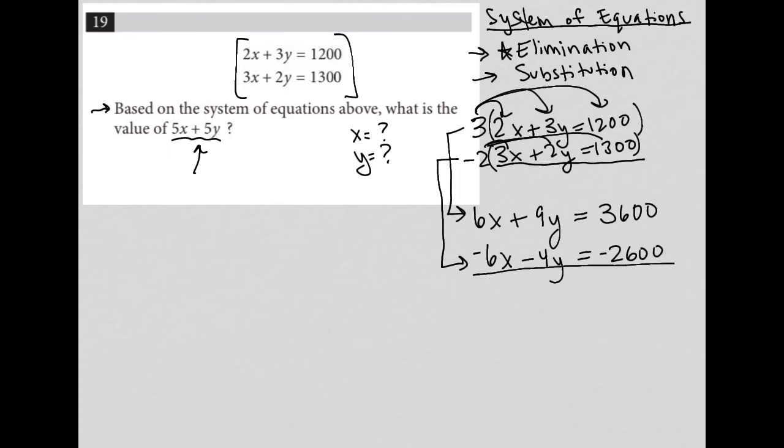Now when I add these two equations together, I achieve exactly what I sought to achieve by eliminating the x value. What I have left is 5y: 9y minus 4y equals 1,000. Dividing both sides by 5, I get that y equals 1,000 divided by 5, which is 200.